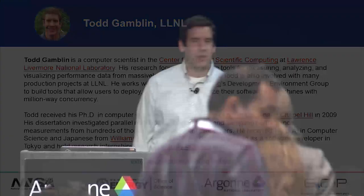I'm Todd Gamblin from Lawrence Livermore National Lab, and I'm going to talk about SPAC, a tool that I developed, but more broadly about building things, which is what SPAC is about. My background is I used to work as a web developer before I got into HPC — I did web development for about a year, which gave me an appreciation of automating things — then I went back to grad school and got into HPC.